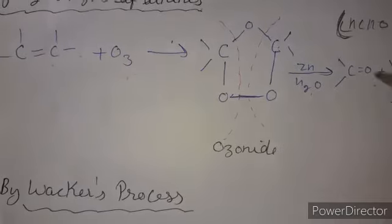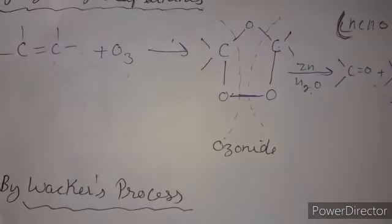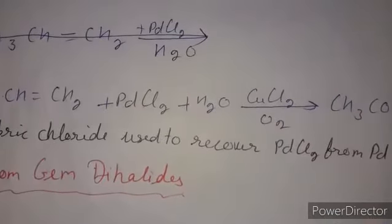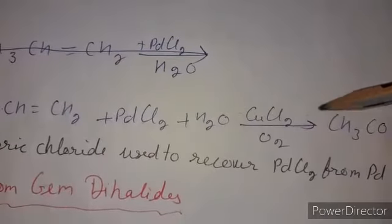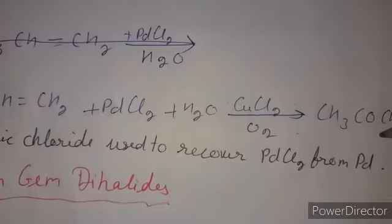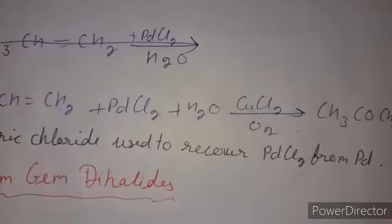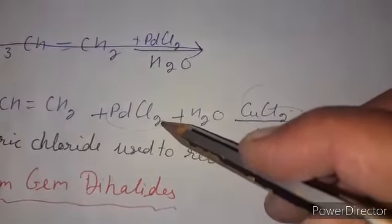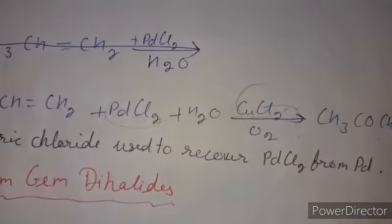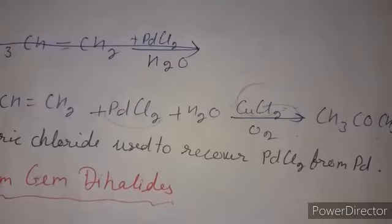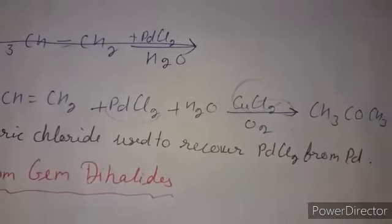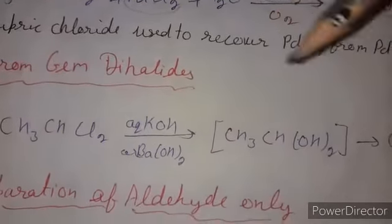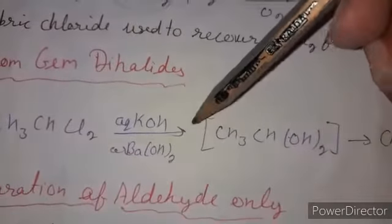The next method is the Wacker process. We react propene or ethene with palladium chloride and water in the presence of cupric chloride in air to form acetone or an aldehyde, depending on the starting reactant. Cupric chloride is added to recover and regenerate the expensive palladium chloride catalyst so it can be reused.